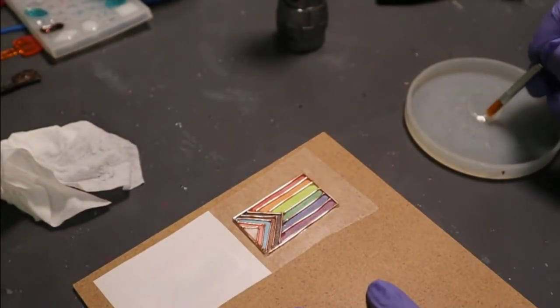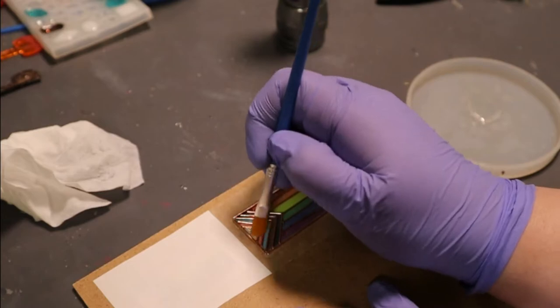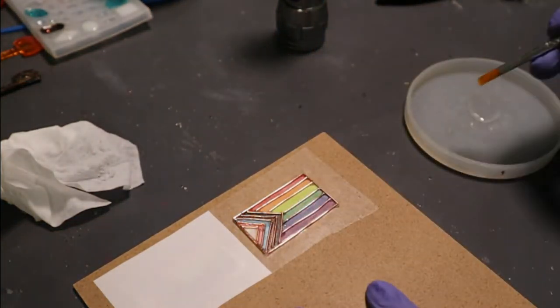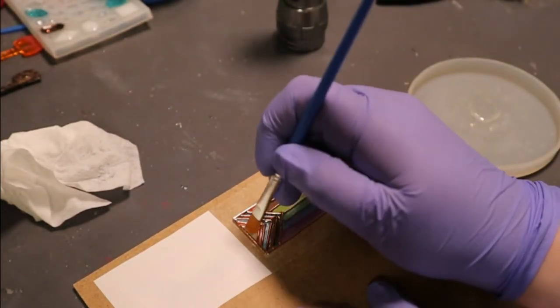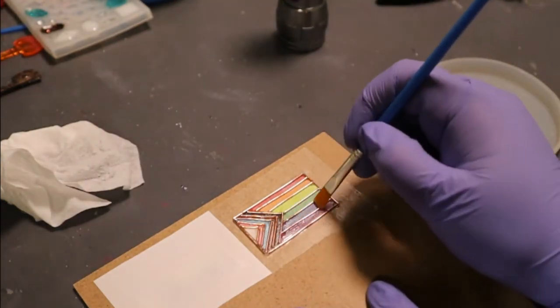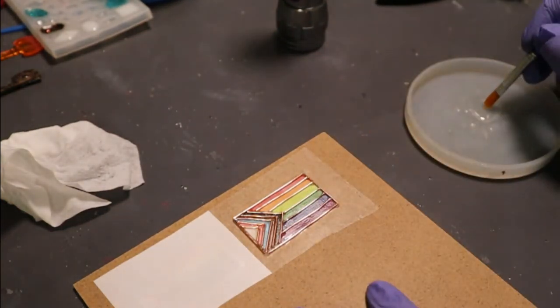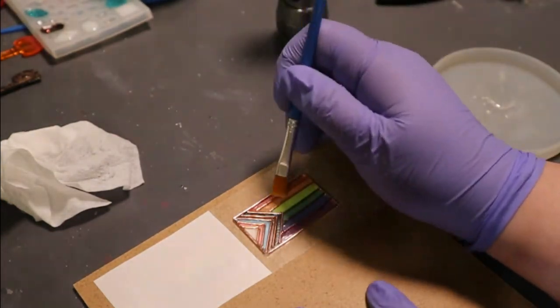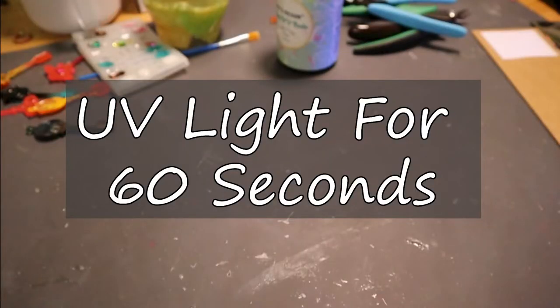Put under the UV light for 60 seconds to cure. Brush a thin layer of clear UV resin over the whole piece. This is to prevent the individual colors from leaking under the wires and mixing together. Put under the UV light for 60 seconds to cure.